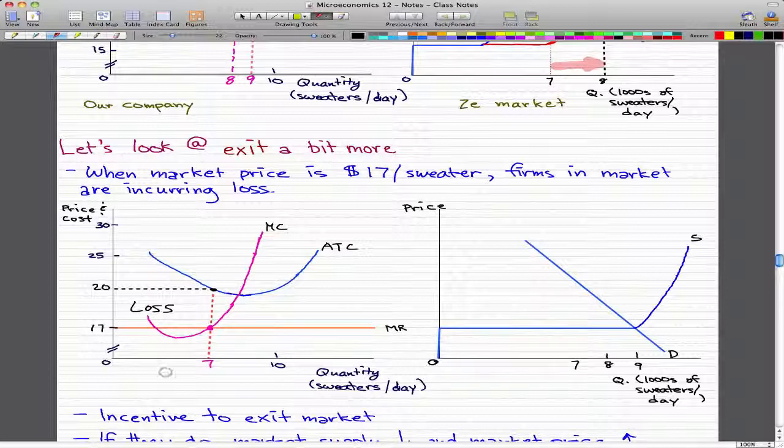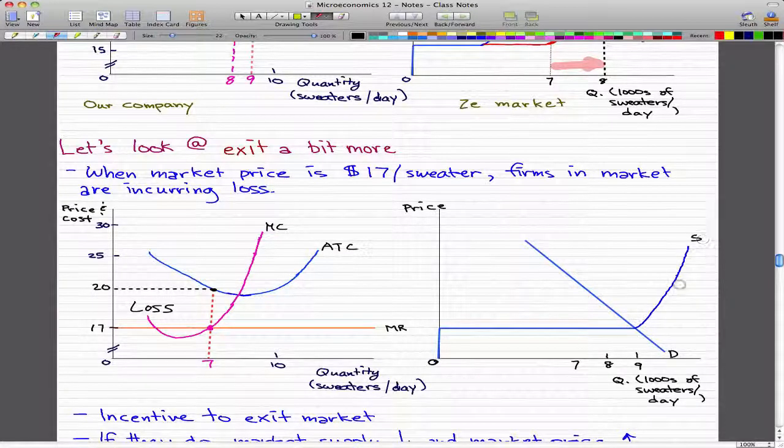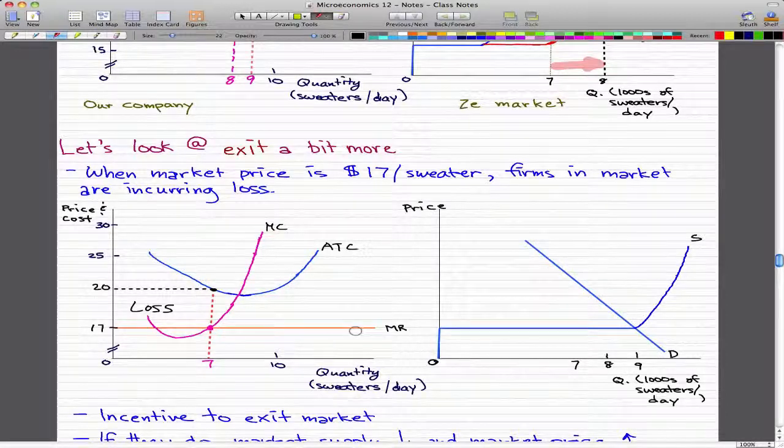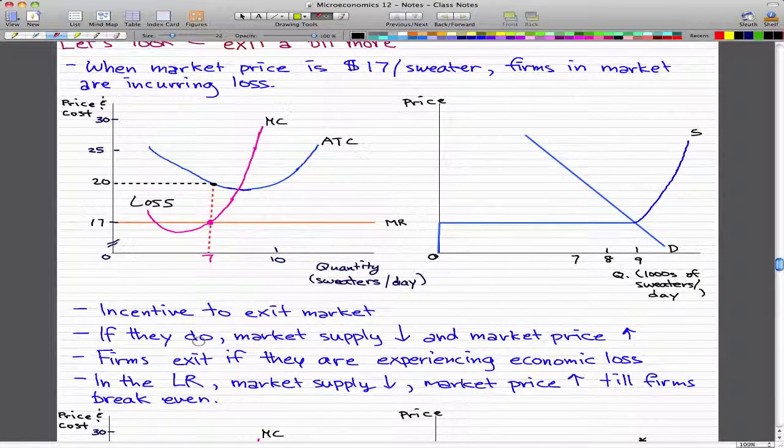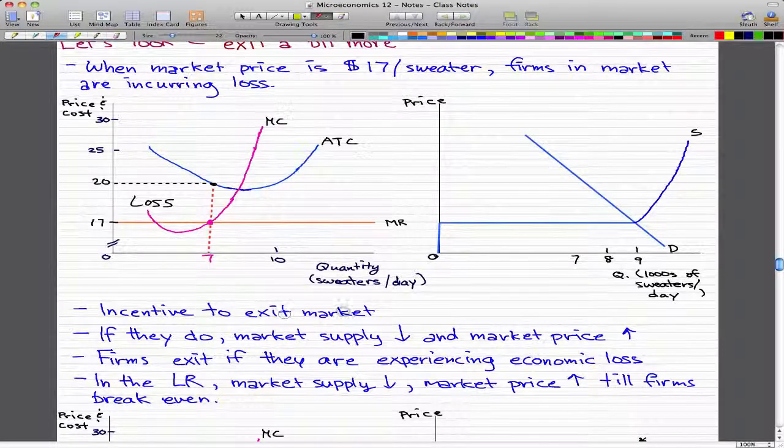Now, in this situation, the supply and demand curves are shown here, but more importantly, firms really have an incentive to exit the market. And when they do, the market supply will decrease and the market price will rise.